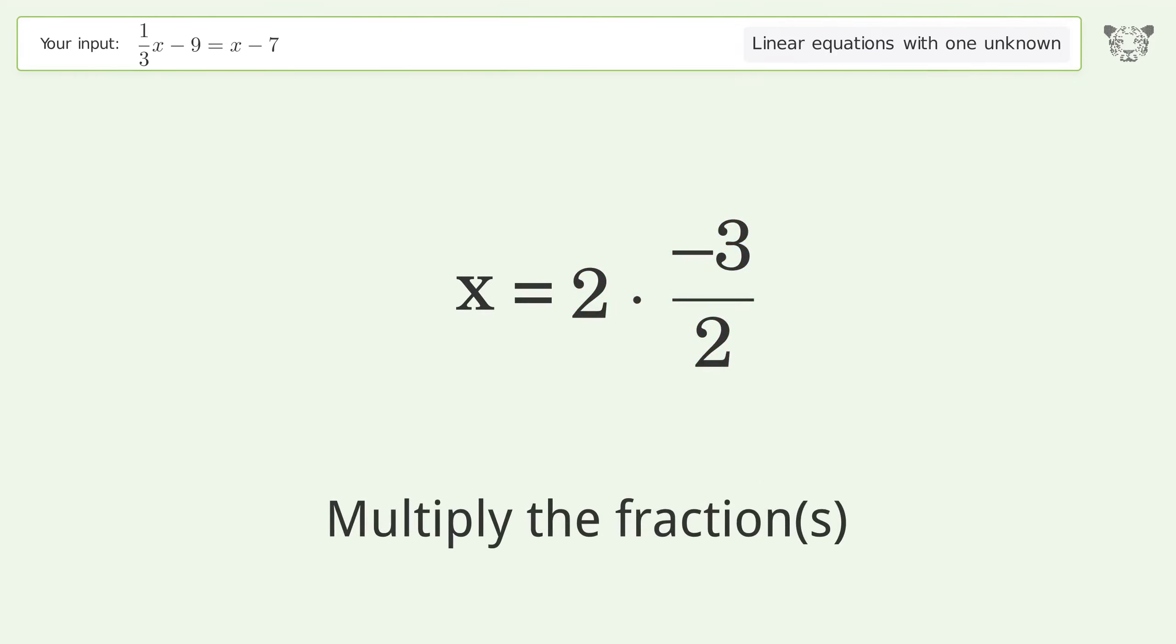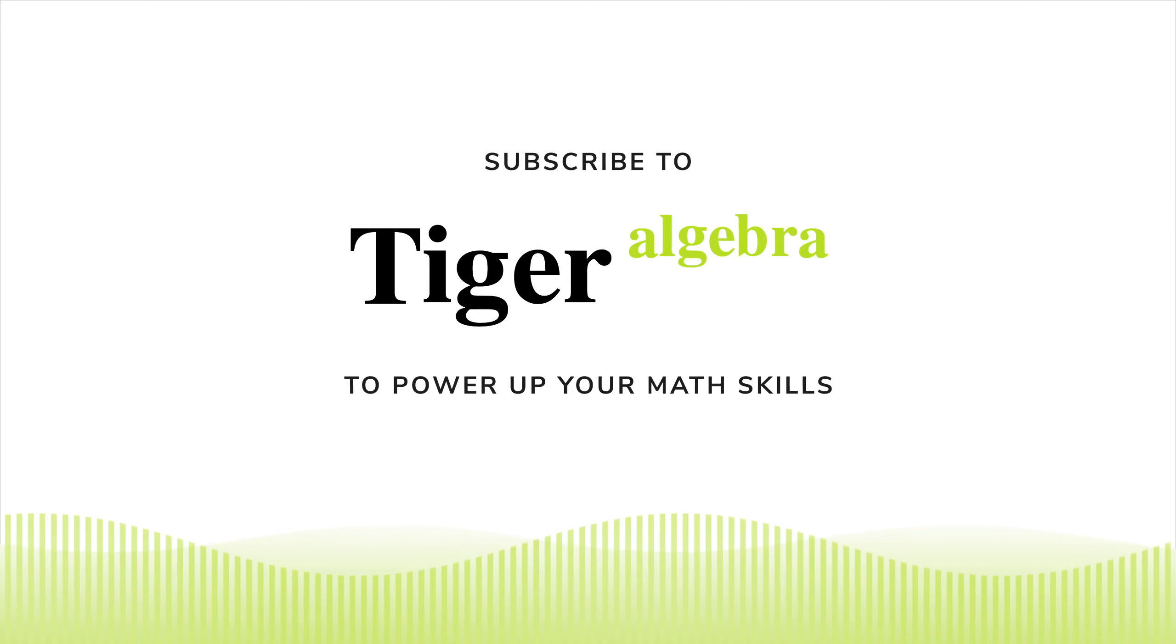Multiply the fractions. Simplify the arithmetic. And so the final result is x equals negative 3.